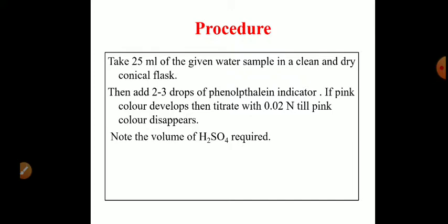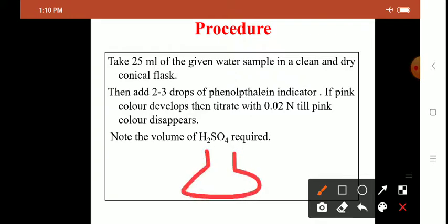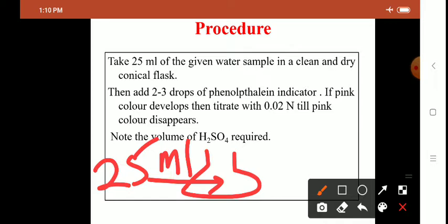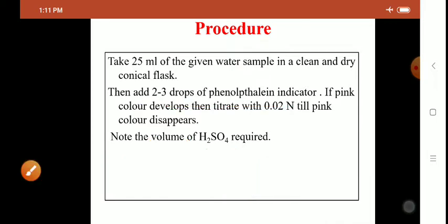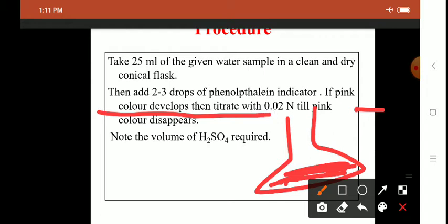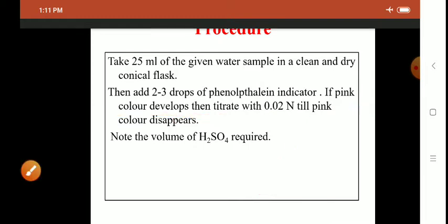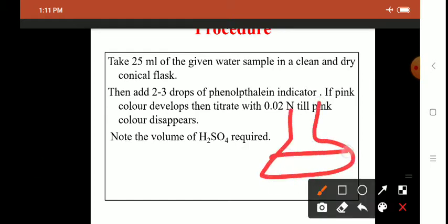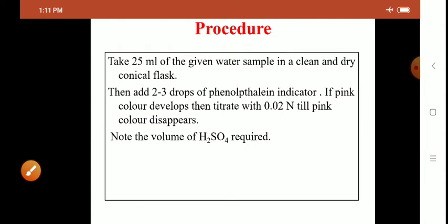Take a clean and dry conical flask and add 25 ml of the water sample. Add 2 to 3 drops of phenolphthalein indicator. If pink color develops in the water, titrate it with 0.02 normal H₂SO₄ until the pink color disappears — that is, until the water becomes transparent again. This reading is reported as A, the volume of H₂SO₄ required to remove the color of phenolphthalein.